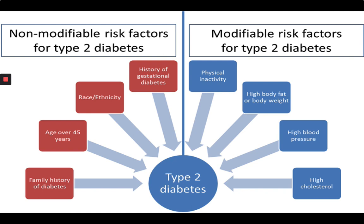Modifiable risk factors — things you can change — include physical inactivity and leading a sedentary lifestyle without exercising enough. This can lead to weight gain, and being overweight or obese is a very important risk factor for type 2 diabetes. Additionally, having high blood pressure and high cholesterol also increases your risk of type 2 diabetes.